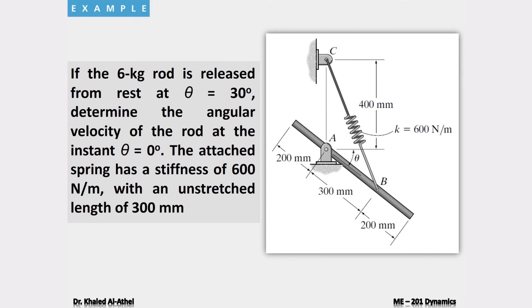For the second example: a 6-kilogram rod is released from rest at theta = 30°. Determine the angular velocity of the rod when theta = 0° (horizontal). The attached spring has stiffness k = 600 N/m and an unstretched length of 300 mm. Since only weight and spring forces act, this is a conservation of energy problem.